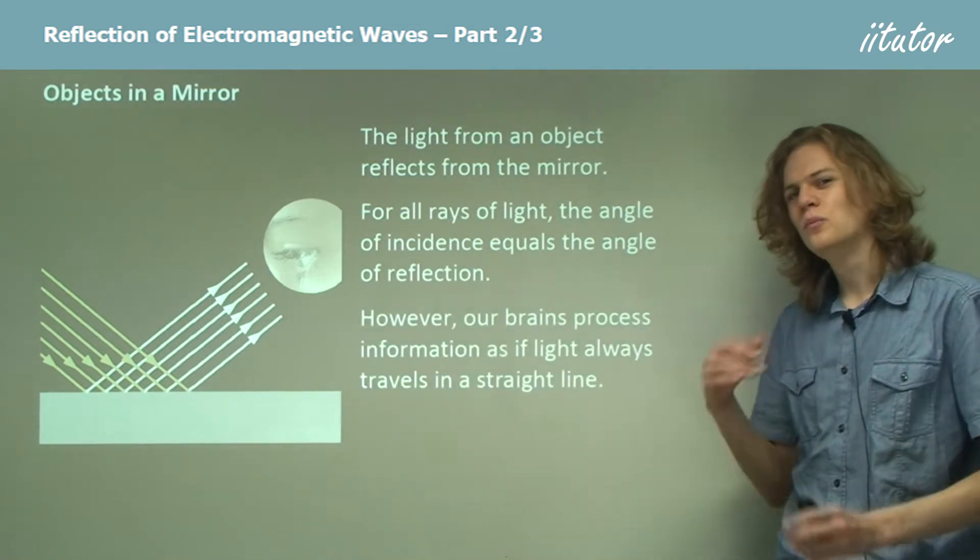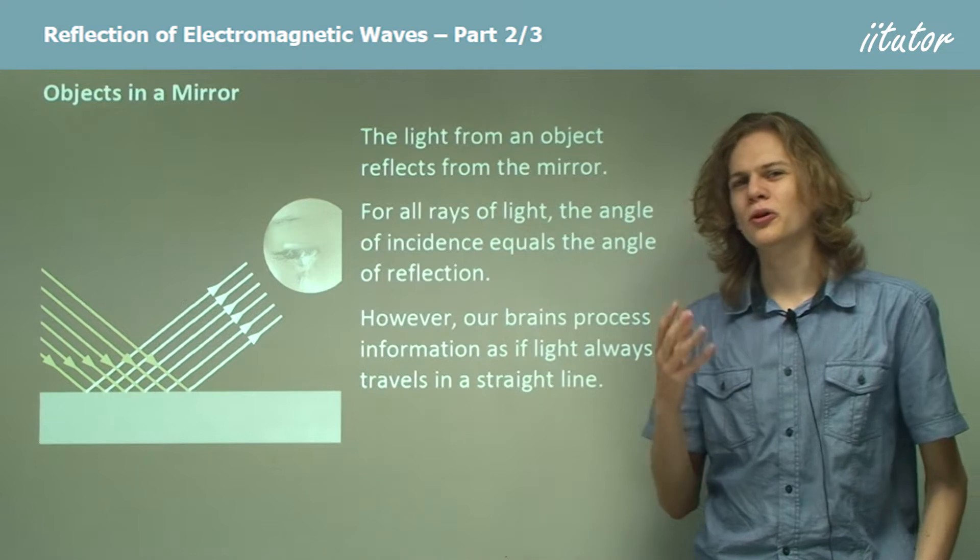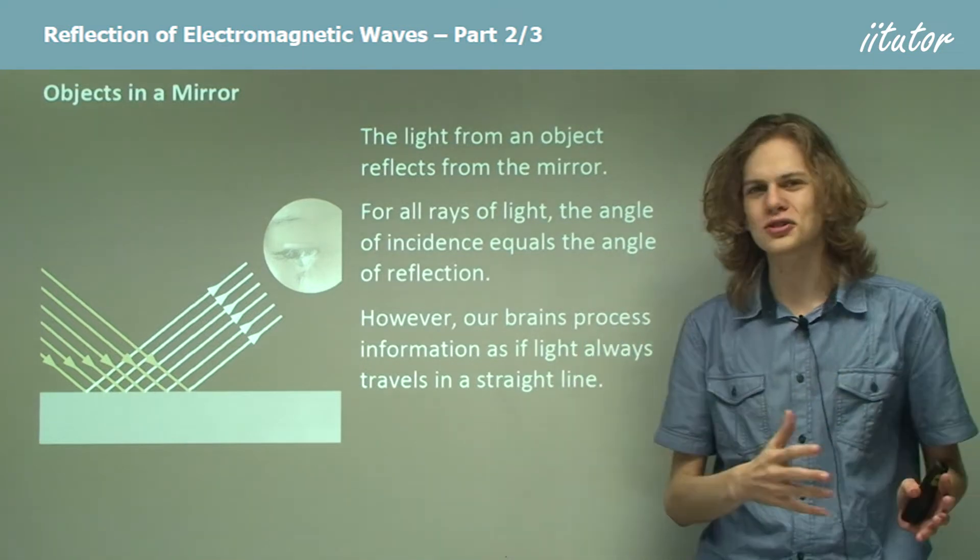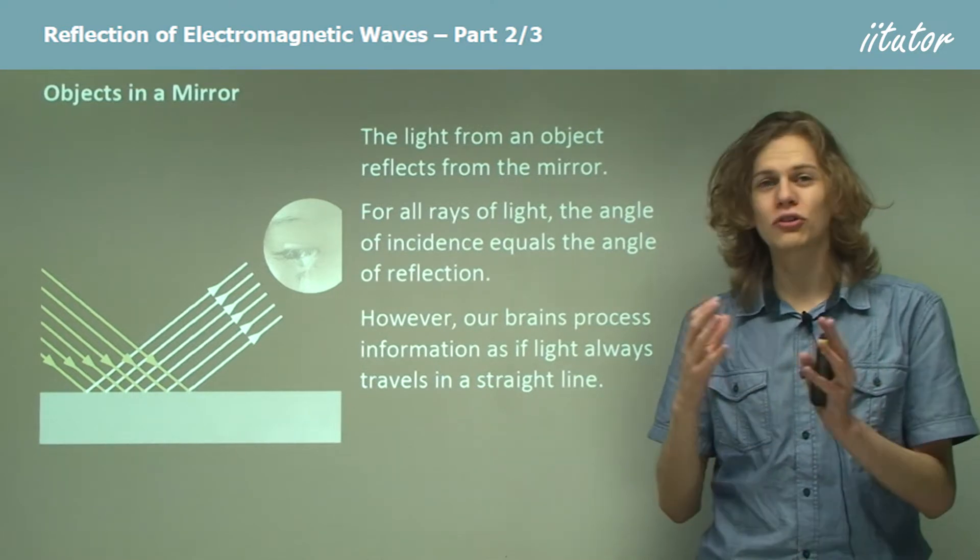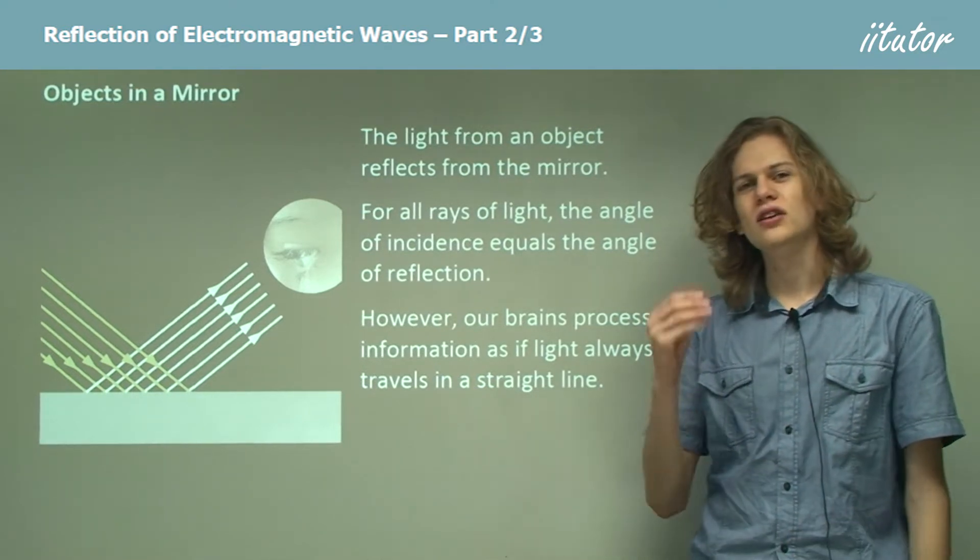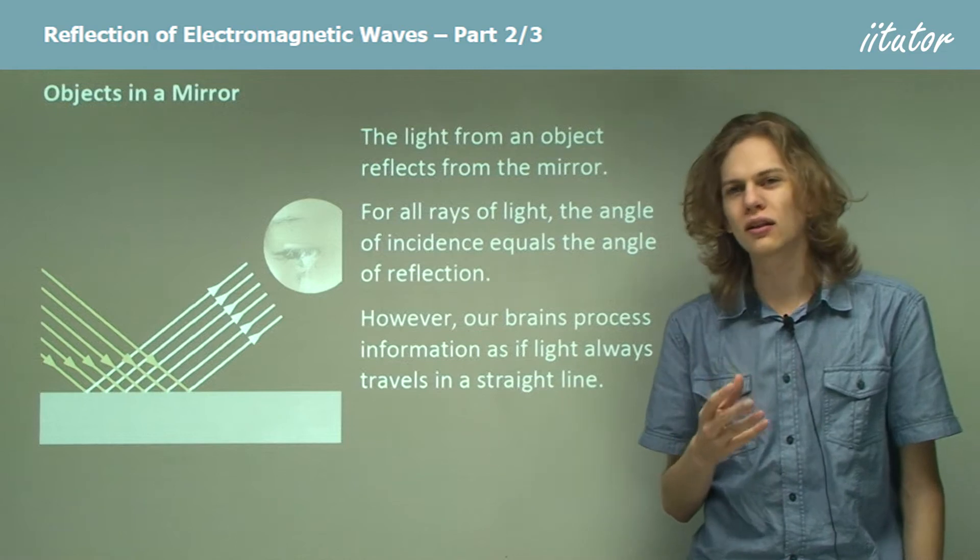The thing is, our brains don't really work in a way that lets us understand reflections properly. See, the brain has a way of looking at light which makes sense for almost every circumstance, that says that light always travels in straight lines.